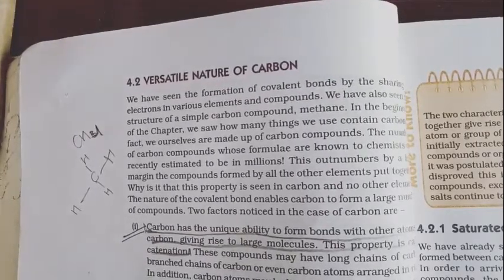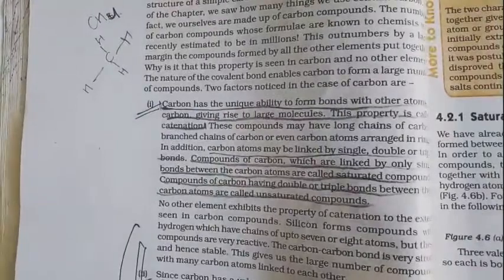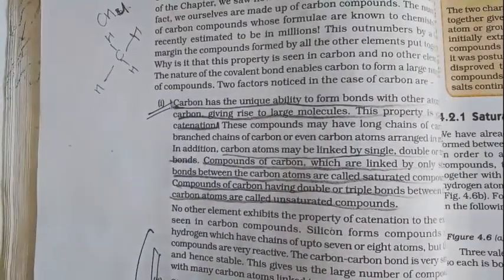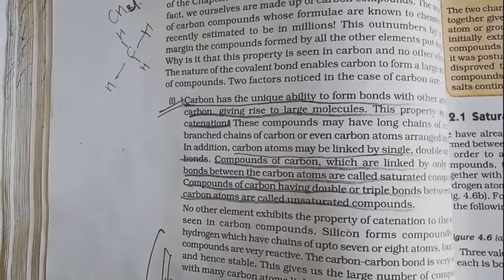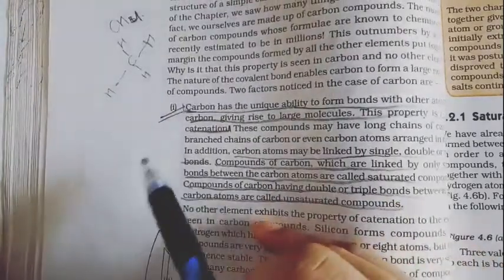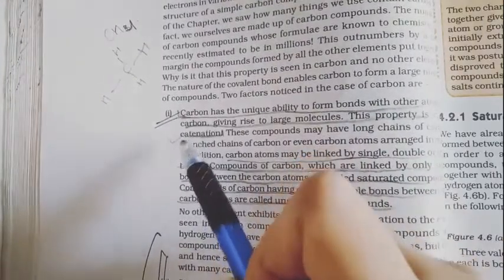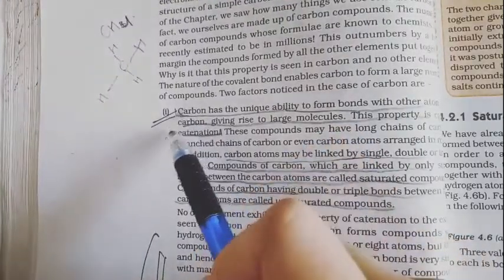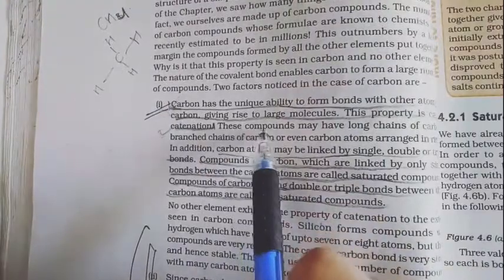There are two factors that we noticed about carbon. The first factor was that carbon has the unique ability to form bonds with other atoms of carbon. This means that carbon can bond with its own element to create large molecules where many carbon atoms are bonded together. Because it can bond with its own element, this property is called catenation.